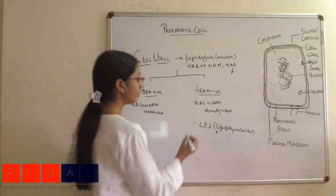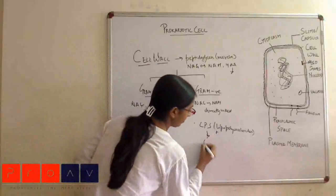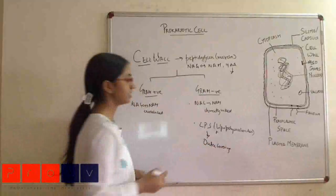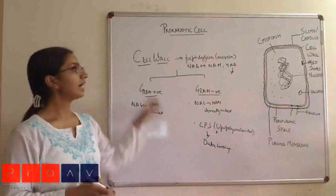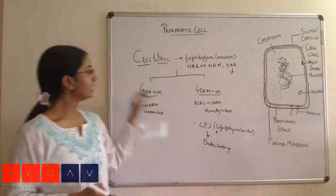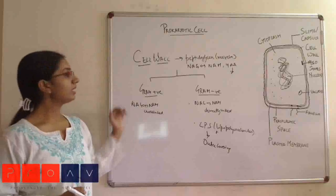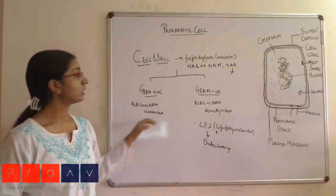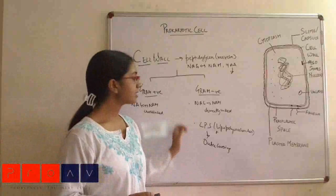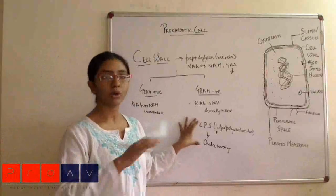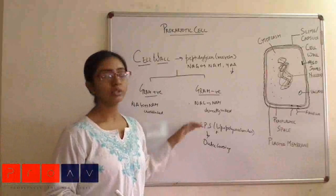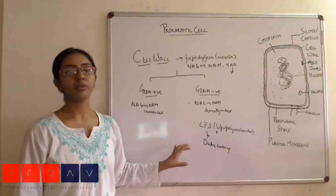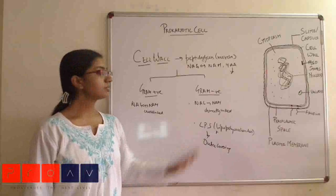During staining, when we use the crystal violet dye, in the case of gram-positive bacteria, the crystal violet actually permeates inside and binds to the NAG and NAM residues, so a permanent staining occurs. But in the case of gram-negative bacteria, the LPS layer actually blocks the crystal violet from entering into the cell membrane, so the staining is only temporary, and as soon as we do a washing, the stain is permanently lost.